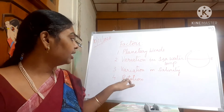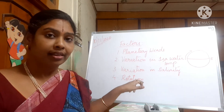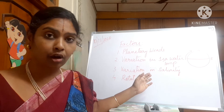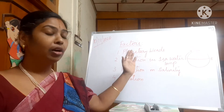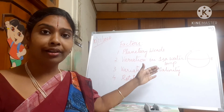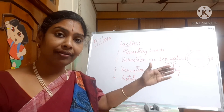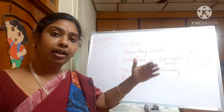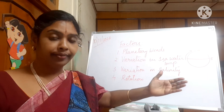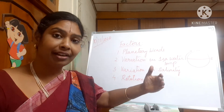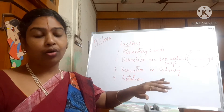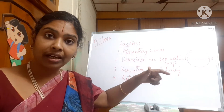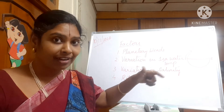The next factor is the rotation of the earth — this is the Coriolis effect or Ferrell's law. All ocean currents and winds in the northern hemisphere will be deflected to the right of their course, and in the southern hemisphere they will be deflected to the left, because of the rotation of the earth from west to east.